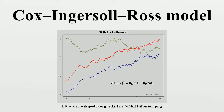The distribution of future values of a CIR process can be computed in closed form, where y follows a non-central chi-squared distribution with degrees of freedom and non-centrality parameter. Formally, the probability density function is given, where the expression includes a modified Bessel function of the first kind of order.